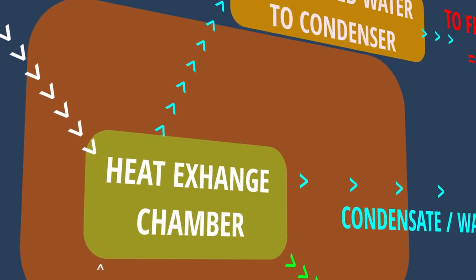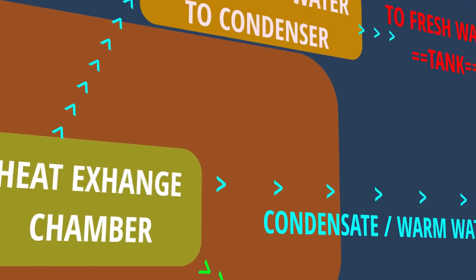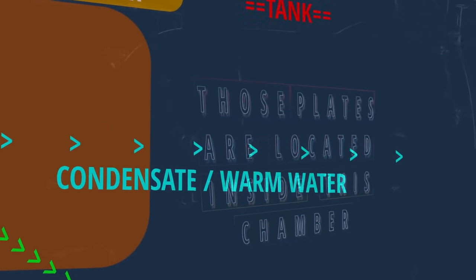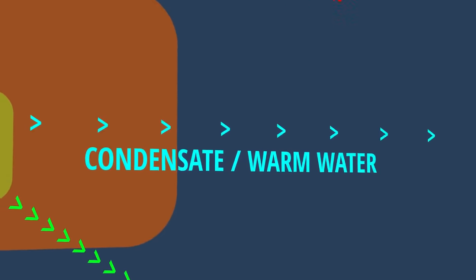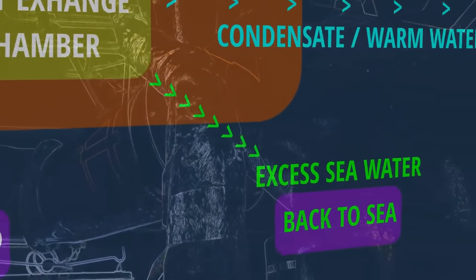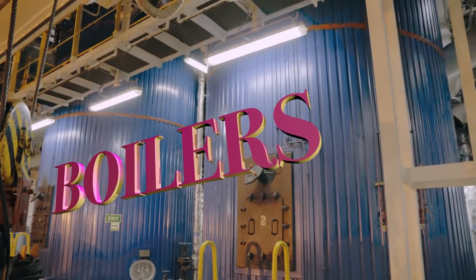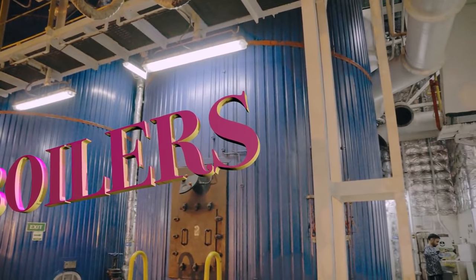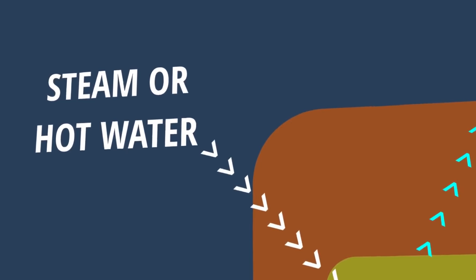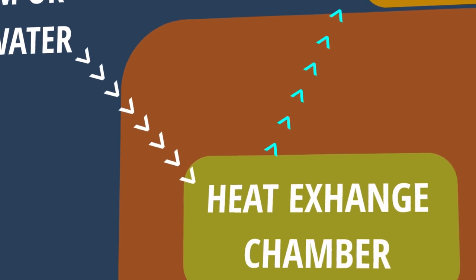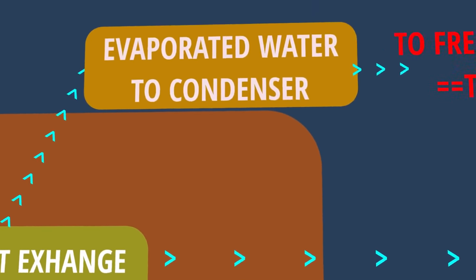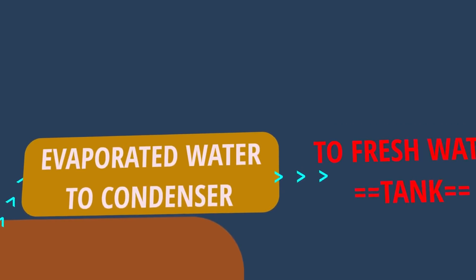Our pump will suck the sea water around the vessel and put it into the fresh water generator. In the fresh water generator, we have two things. One thing is that we put hot water in the fresh water generator and the water will evaporate from the plates. We can also use steam to generate fresh water. When the plates inside the heat exchange chamber are heated, your sea water will evaporate and solid deposits — the impurities — will stay there.